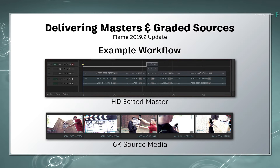In our example, we'll be delivering the master edit in 1080 HD, as well as the graded source material which has a 6K resolution. In order to achieve this, you are going to use the source segment connection in the edit, which will link the grade back to the 6K source clips.